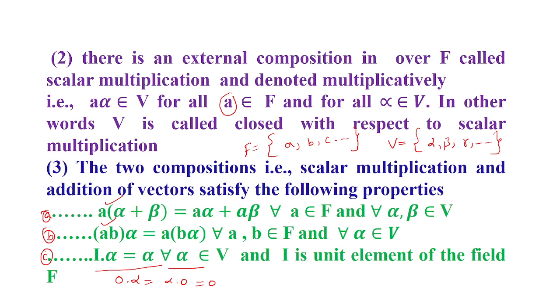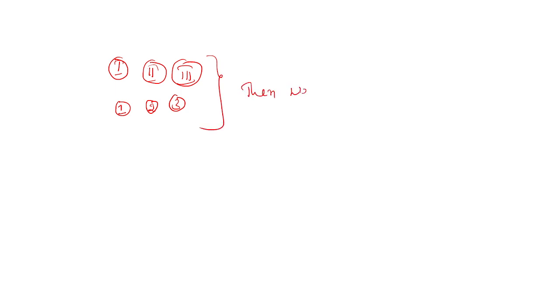So if the set follows rule number one, rule number two, and rule number three — that is, all the points we discussed — then we call it a vector space. If it does not follow any one of these rules, then we cannot call it a vector space. If and only if it follows all these rules, then we can call it a vector space.